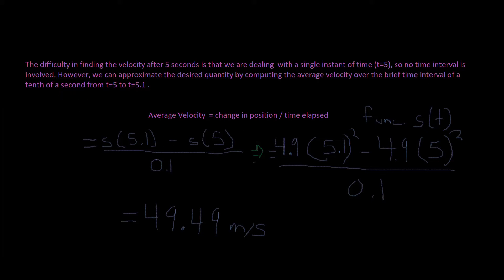And so this would be expressed by average velocity equals change in position divided by time elapsed. And so our time elapsed would be 0.1 because 5.1 minus 5 is 0.1. And our given function, which is s(t). So that's why this is expressed this way, change in position minus the change of position right here.